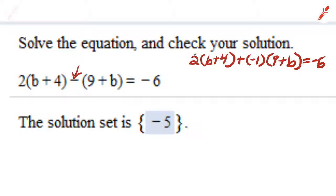So I'll multiply this 2 by b, and 2 multiply it by 4. I'll take the negative 1 and multiply by 9, and the negative 1 and multiply by b. So 2b plus 8 plus negative 9 plus negative 1b equals negative 6.